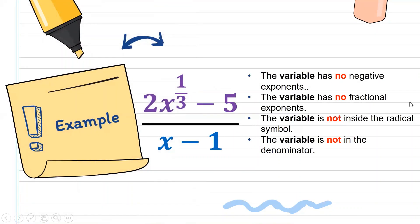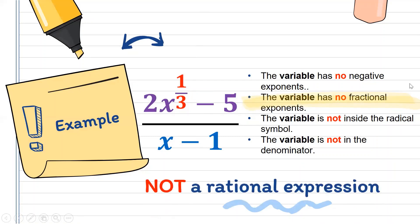Third example: 2x raised to 1/3 minus 5, all over x minus 1. First condition: no negative exponent — met. Second condition: no fractional exponent. We can see that in the numerator, the exponent is 1/3, which is a fraction. Therefore, it does not satisfy the second condition, and this example is not a rational expression.